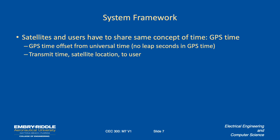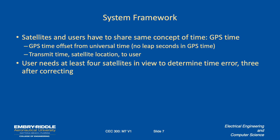The concept is that the satellites and users share the same concept of time called GPS time. GPS time is slightly distinct from Universal Time — it was initiated in sync with Universal Time but does not apply leap seconds, so GPS time and Universal Time have diverged by about 16 or 17 leap seconds. The satellite transmits the time and its location to the user; the user has a clock and measures the time interval for the message to arrive, estimating the distance to the satellite. Using measurements from at least four satellites, you can determine your position.